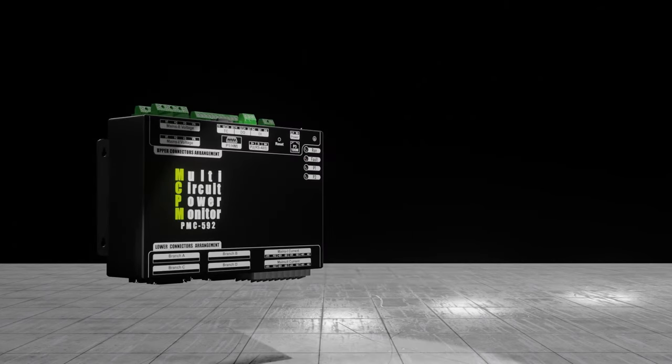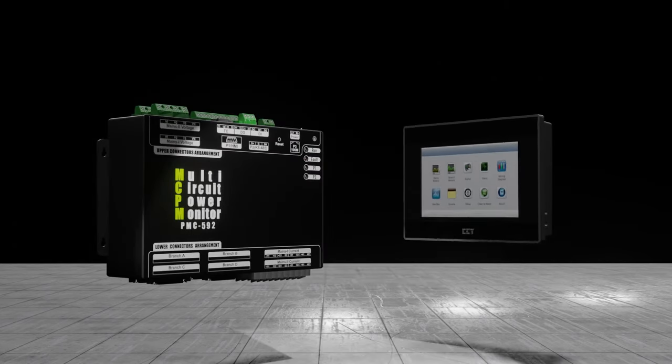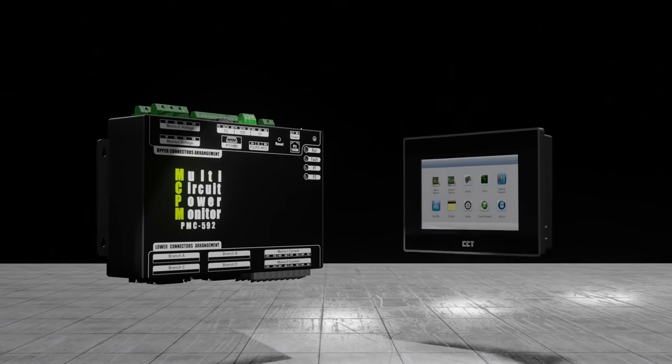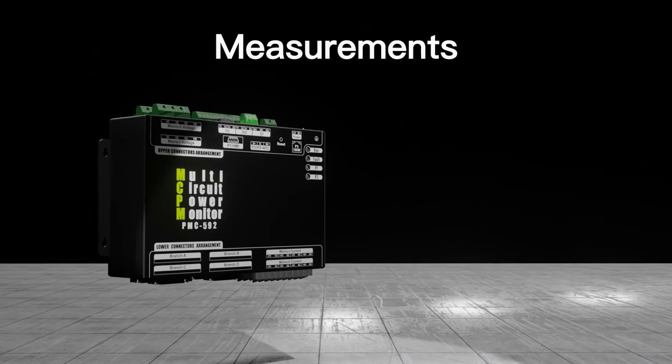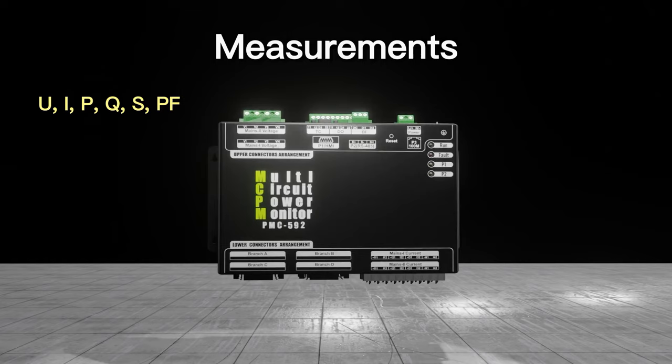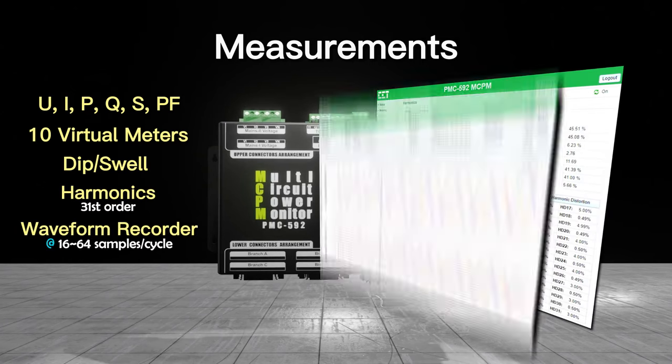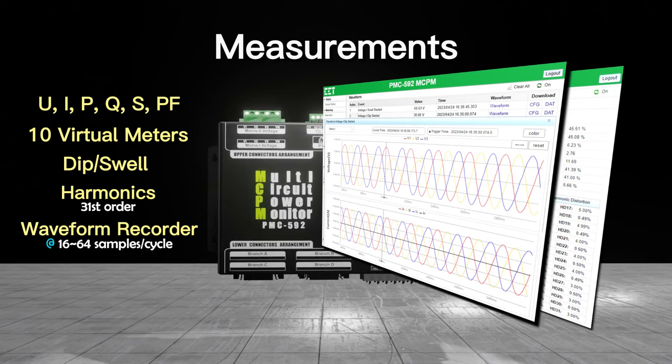The device also comes with an optional HMI with 7-inch color touchscreen LCD. The PMC592 features high-accuracy measurements for voltage, current, power and energy, configurable virtual meters, power quality monitoring such as dip swell, harmonics up to 31st order, and waveform recorder with programmable resolution up to 64 samples per cycle.